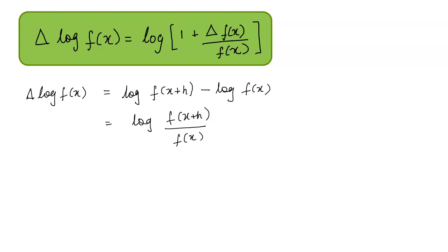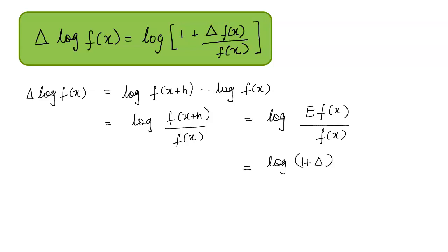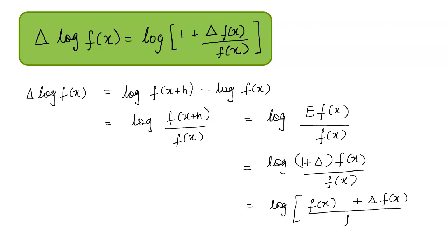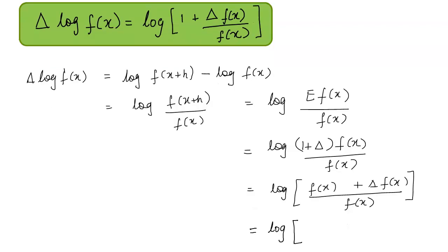Next, f(x plus h) can be written in terms of shift operator as E of f(x), since E f(x) equals f(x plus h). So we have log of E f(x) upon f(x). Now we know that E can be expressed in terms of forward difference operator as E equals 1 plus delta. So this can be written as log of 1 plus delta applied to f(x) whole divided by f(x). This gives us 1 plus delta f(x) divided by f(x), and this is what we had to prove.